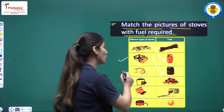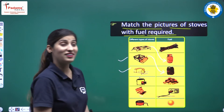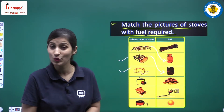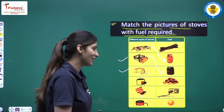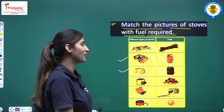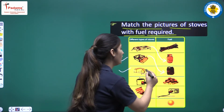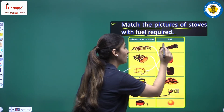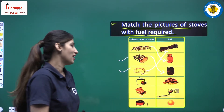Next one is the earthen stove — mitti ka chula. What do we need for the mitti ka chula? We need wood — lakdiya chahiye hoti hai, right?